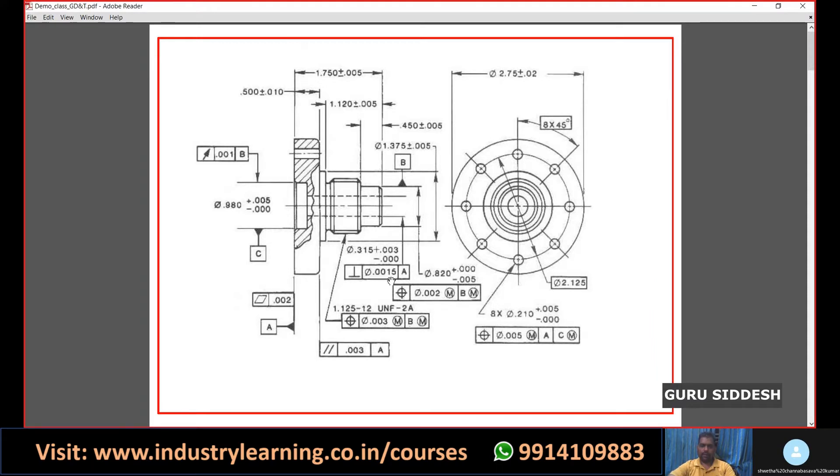For example, the perpendicularity of diameter 0.0015 with respect to datum A. We get confused about where we will get this value, diameter of 0.0015. Like that, there is another value called position diameter of 0.002 at maximum material condition with respect to datum B at maximum material condition.